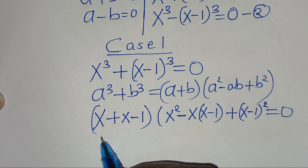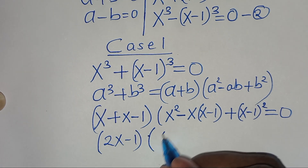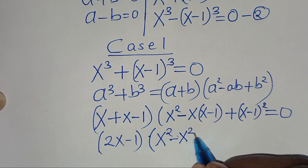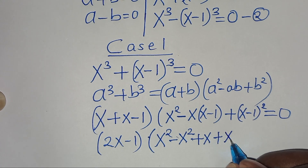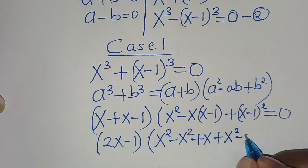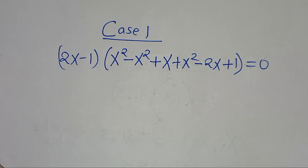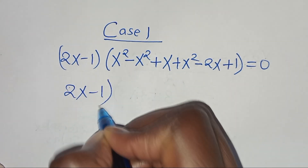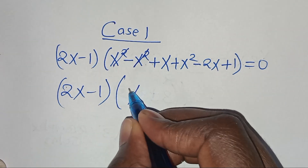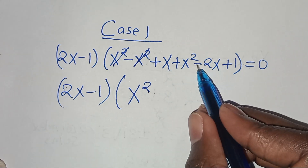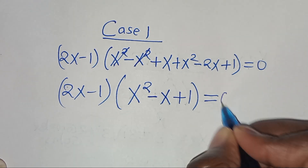So this means we have x plus x, which is 2x, subtract 1, then in the next parenthesis we have x squared, subtract x times x which is x squared, minus x times minus 1 which becomes plus x, then plus. Expanding x minus 1 squared gives x squared minus 2x plus 1. So from here we have 2x minus 1, then inside the bracket x squared minus x squared simplifies, leaving x squared plus x minus 2x which is minus x, then plus 1, this is equal to 0.